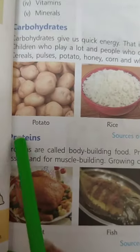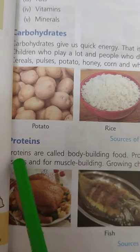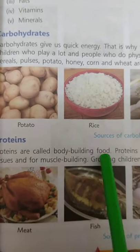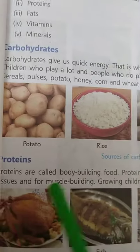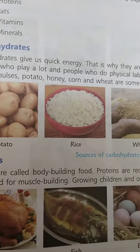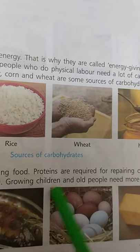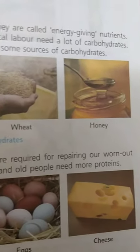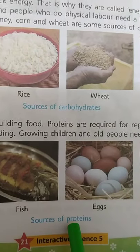Next is proteins. Proteins are called body-building foods. They are required for repairing our worn-out tissues and muscle building. Growing children and old people need more proteins. Meat, fish, eggs and cheese are sources of proteins.